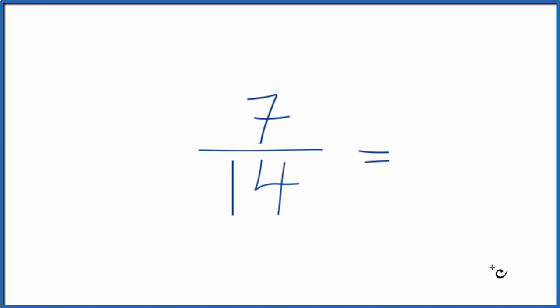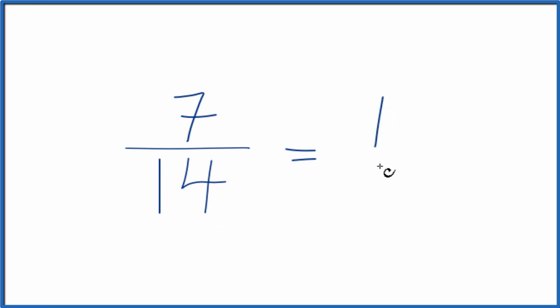So to do that, first off, I can see that 7 would go into itself and 14 evenly. 7 divided by 7, that's 1. 14 divided by 7, that's 2. So the fraction 7/14, we have an equivalent fraction here, is 1/2.